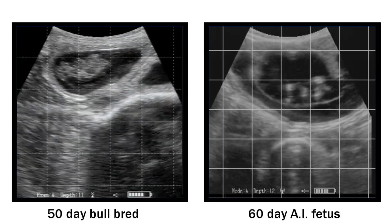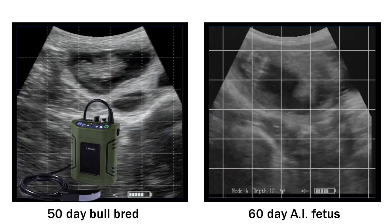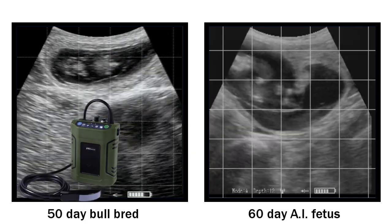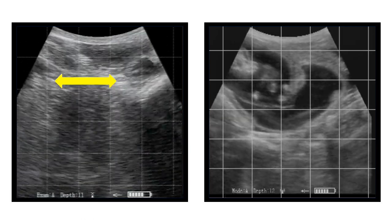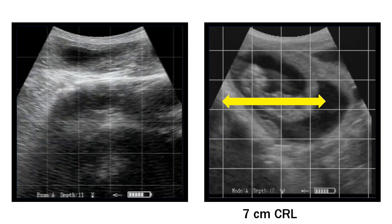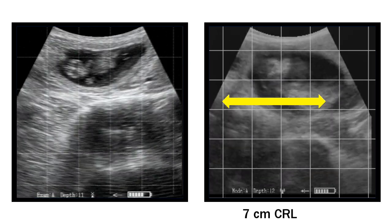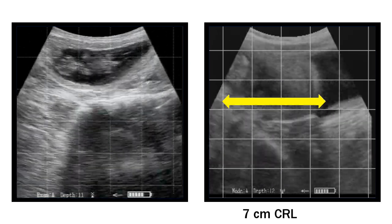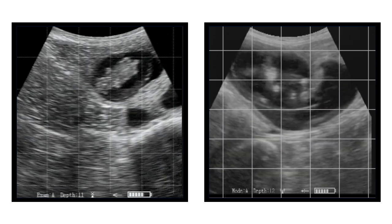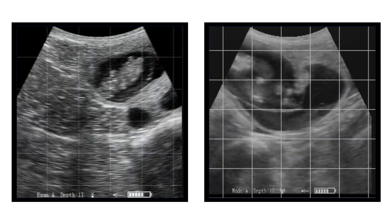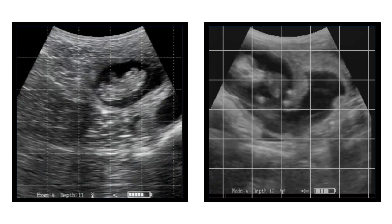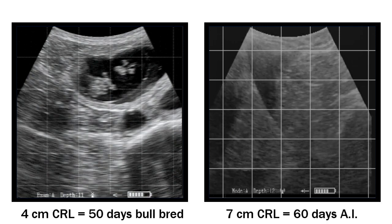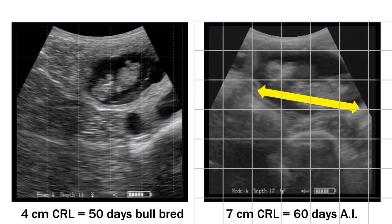On the left here we see a 50-day bull-bred. We're using an XTC with a 2 centimeter grid, and we see a 4 centimeter crown rump length for 50 days. On the right we have a 7 centimeter long measurement — the same 2 centimeter grid — and that fetus is curved a little and won't straighten out for us. So we're going to give that a 7 centimeter crown rump length for the 60-day AI.